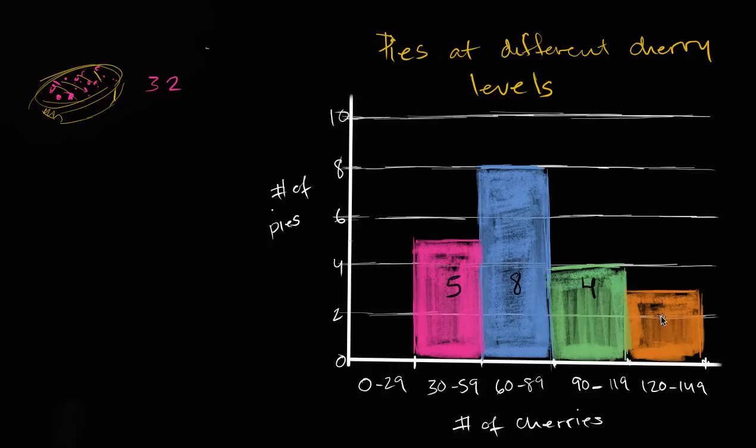And then you have three pies that have at least 120 but no more than 149. And this accounts for all of the pies. So the total number of pies you have at this store are five plus eight plus four plus three,